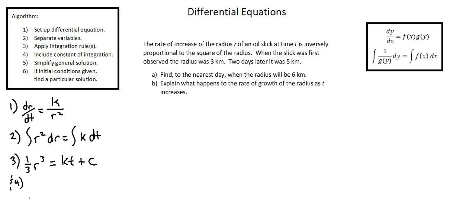If initial conditions given, find a particular solution. We want to find the value of k and find the value of c. So in step six, let's evaluate the two sets of initial conditions we're given. Reading the second sentence: when the slick was first observed, the radius was three kilometers. First observed means time equals zero. In other words, f with an input of zero produces an output of three, using f as the name of this function. Now let's input both of these values into the equation. We have one third times radius cubed. Our radius is three. So three cubed equals k times t. t in this case is zero plus c. Notice what happens when we multiply k times zero. The k term disappears. We're left with one third times three cubed is nine equals c.